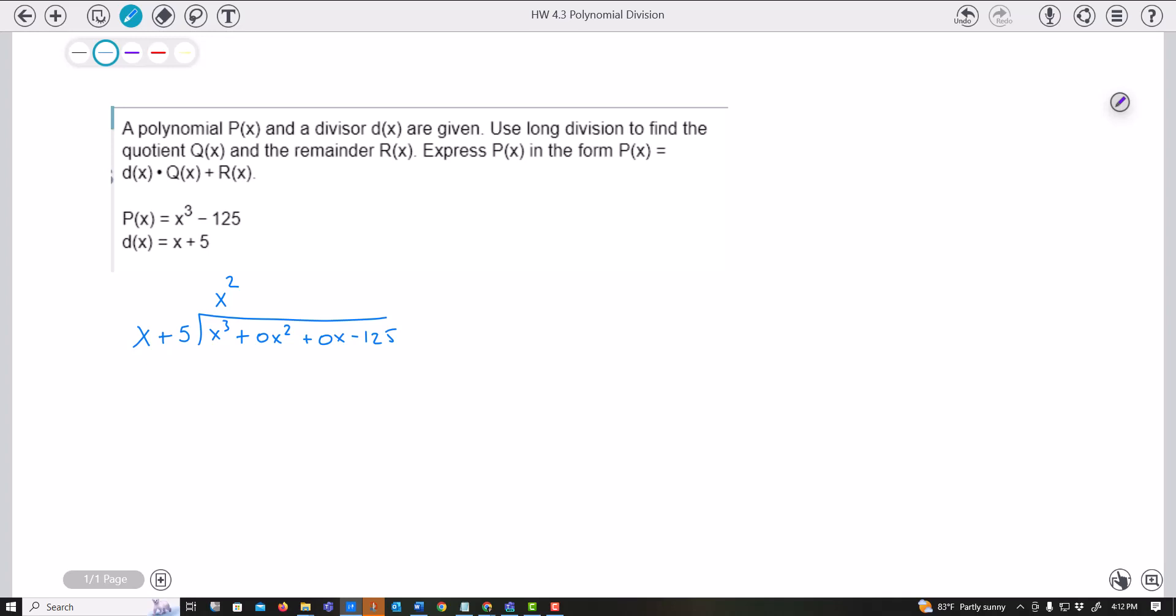And so then x squared times x, x cubed, x squared times 5 plus 5x squared. And remember that you're subtracting this line. So this is all being subtracted.